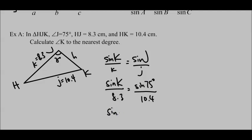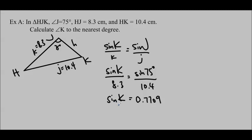We'll just solve for that. You move this 8.3 up and multiply, so sine K equals 0.7709. Make sure you are in degrees, otherwise you'll get the wrong answer, which gives us angle K equals 50 degrees. That is what the question is asking us for and that is what we have found.